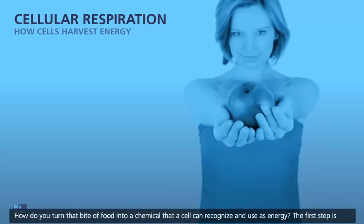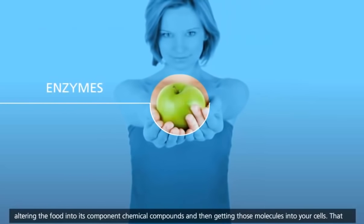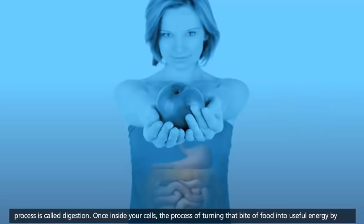How do you turn that bite of food into a chemical that a cell can recognize and use as energy? The first step is altering the food into its component chemical compounds and then getting those molecules into your cells. That process is called digestion.